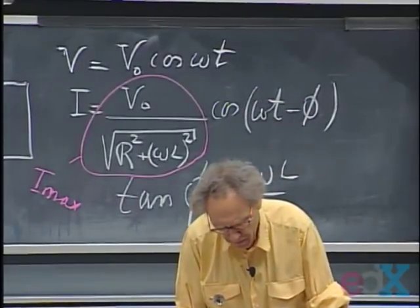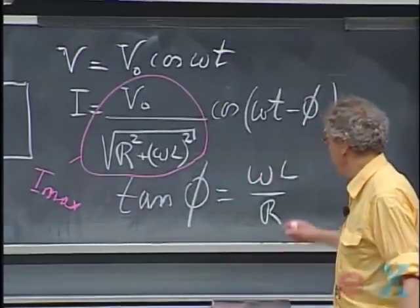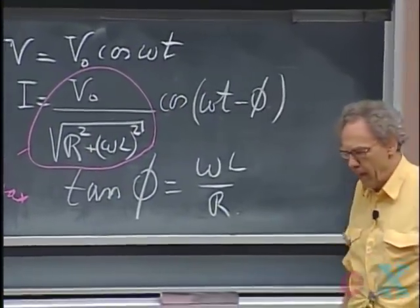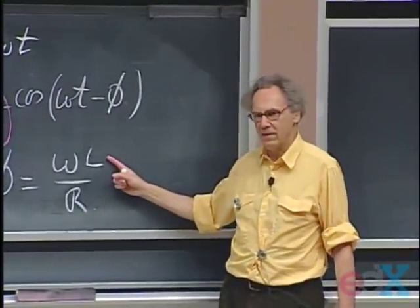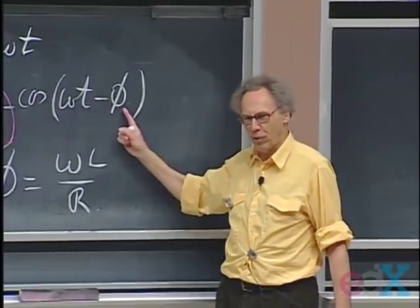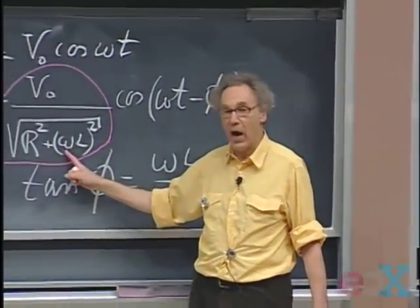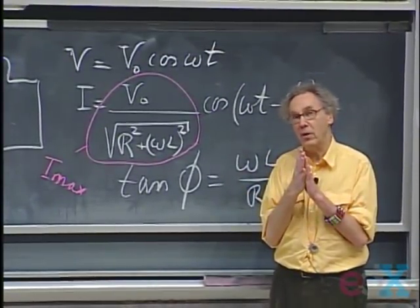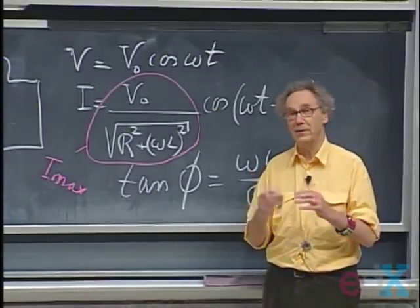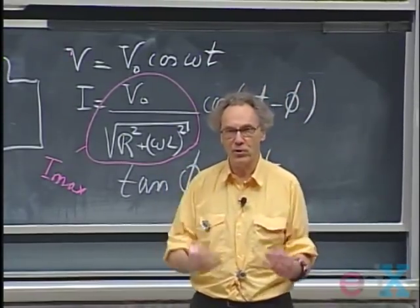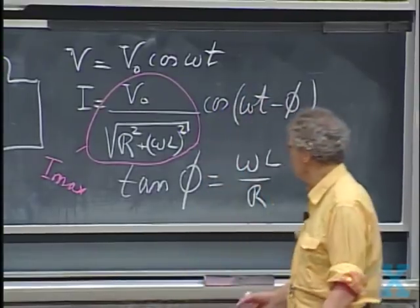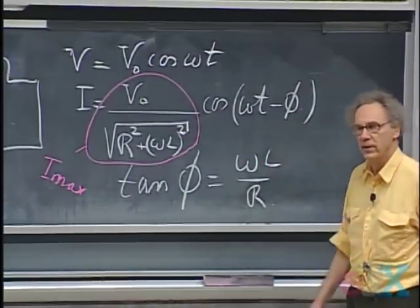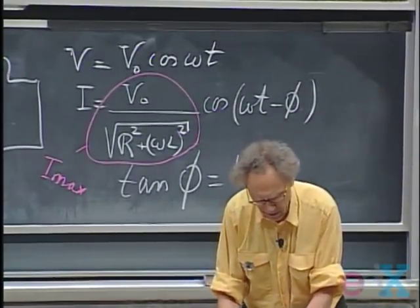The tangent of φ is ωL/R. If the self-inductance is very large, the system has a strong ability to fight back and can delay the current by a large amount. The same is true if ω is high — fast changes occur on a very small timescale, so the system can fight back. The induced EMF is proportional to di/dt, so it's pleasing that both ω and L appear in the numerator.